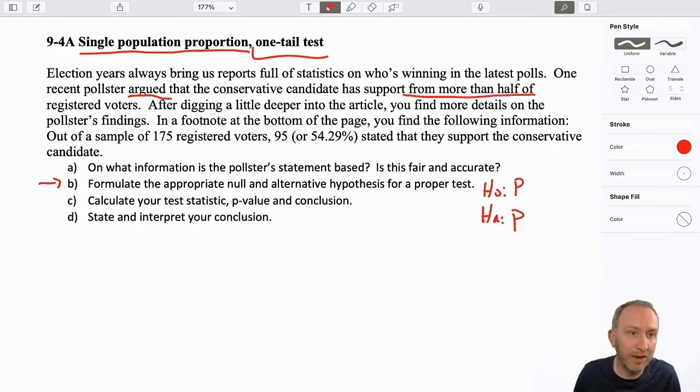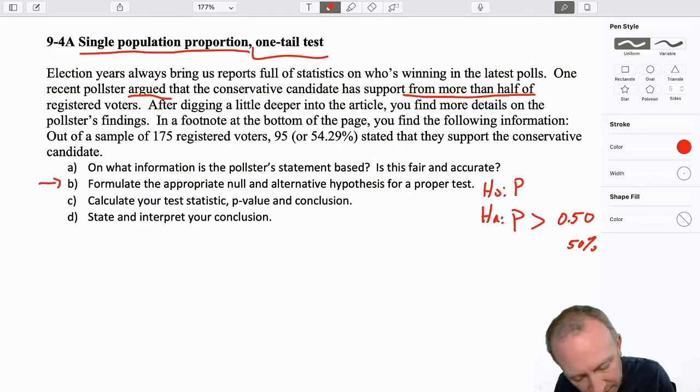And our hypothesized value is a little bit tricky to find because I don't see it as a number. But I see here, they're arguing that the candidate has support for more than half. Well, what is half as a number? Well, that's 50%. I'm going to write it as a decimal. You can write it as a percentage as well if you want. That's perfectly fine. I leave it as a decimal just because then it's a little more consistent with how it's going to show up in the calculations later on. So the claim is that it is more than half. So the alternative supports that. The null, no, it is not more than half.